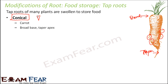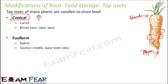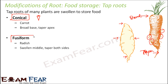This modification of the root in carrot is given the name conical, because of its cone-like shape. In the case of radish, it is swollen in the middle and tapered on both sides. Because its shape is different from the carrot, this type of root modification is given the name fusiform.